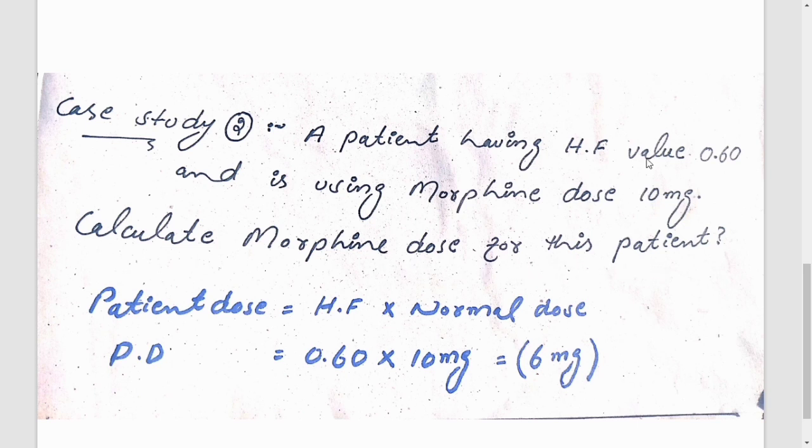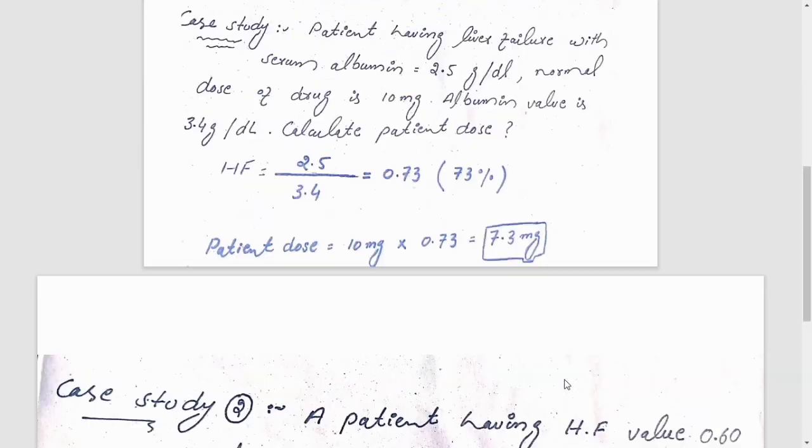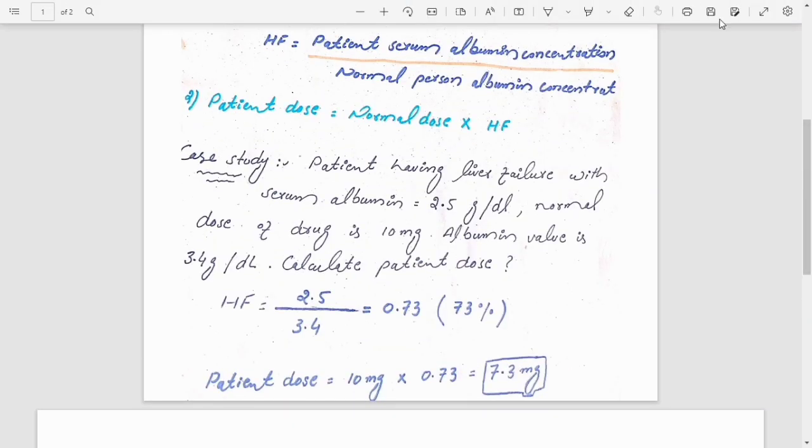So patient dose is equal to hepatic function HF, which is equal to 0.60, multiplied by normal dose 10 milligrams. So we will get 6 milligrams. Administer 6 milligrams to the patient instead of 10 milligrams.